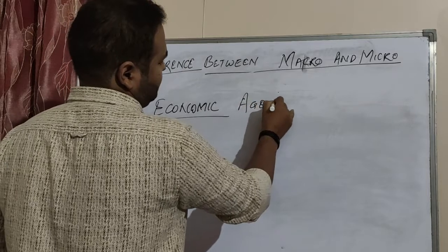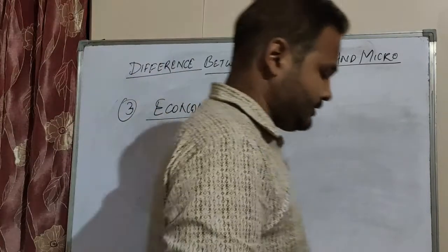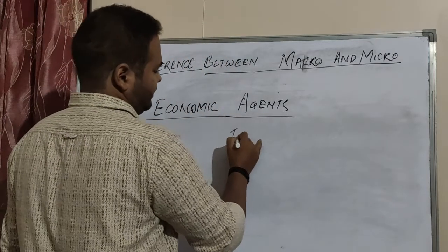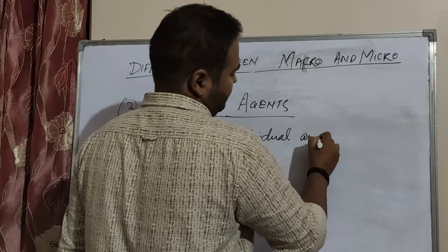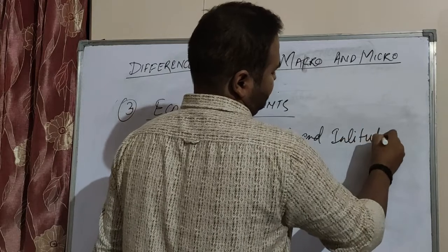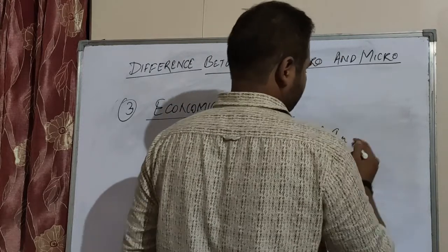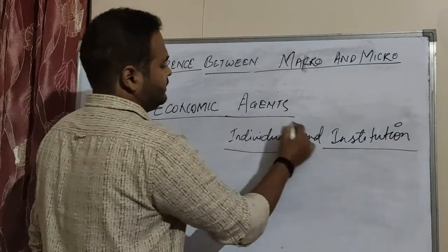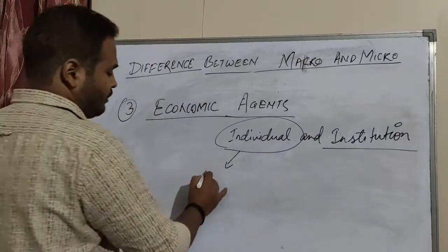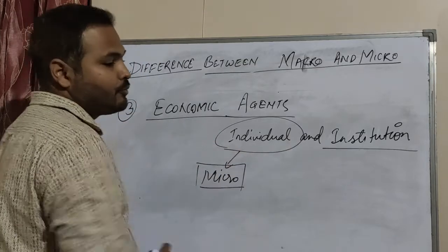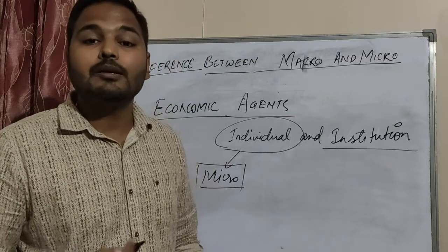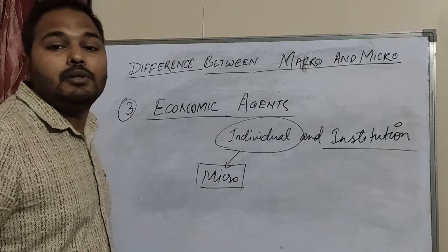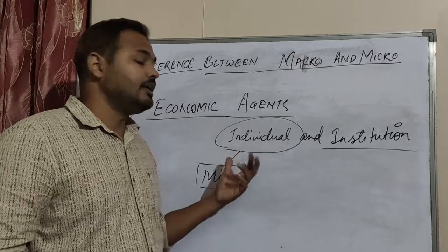The third topic is economic agents. Economic agents refers to single individuals and institutions. The individual is taken under micro, because a single individual or single household deals with their own problem — they are concerned about themselves, wanting to satisfy their needs or achieve profit maximization.